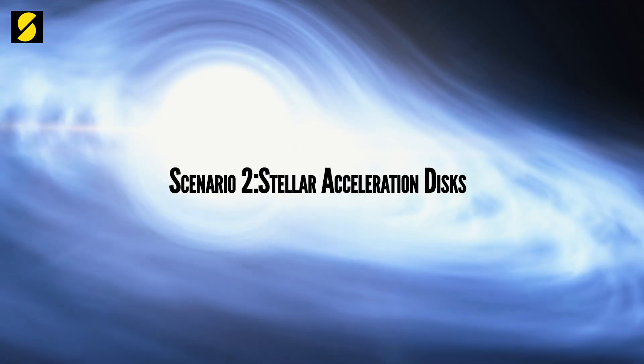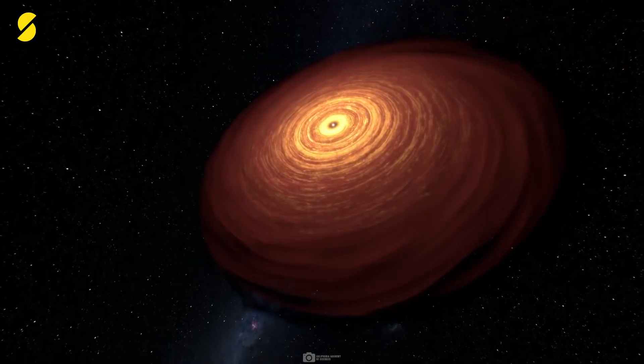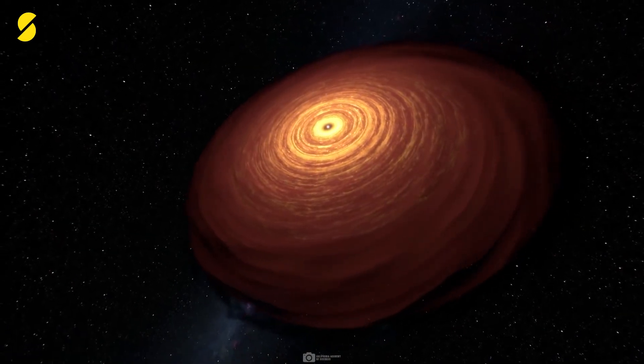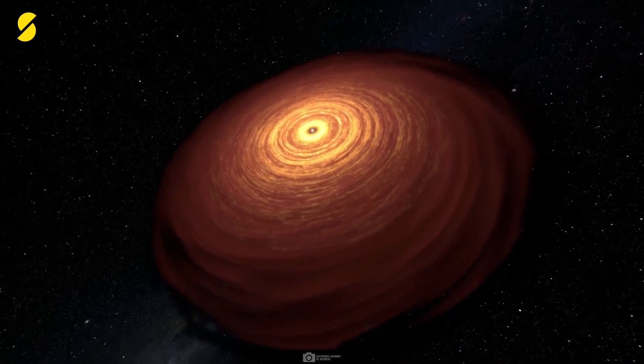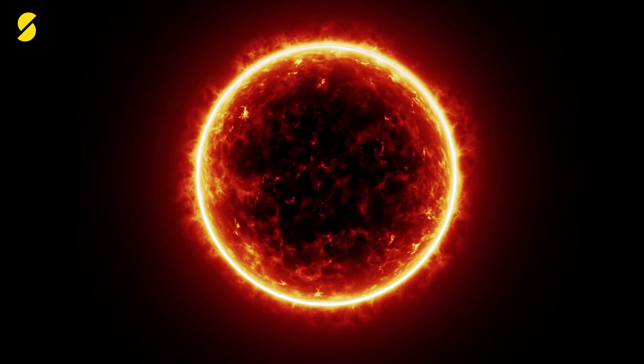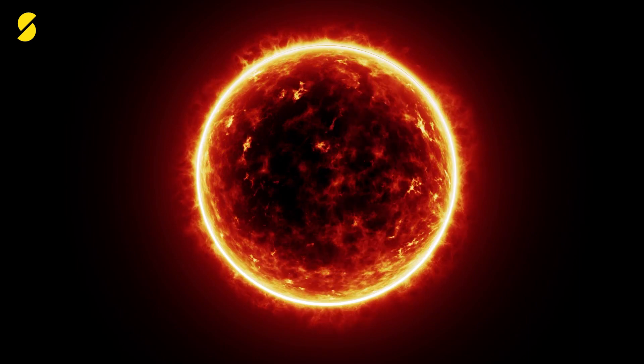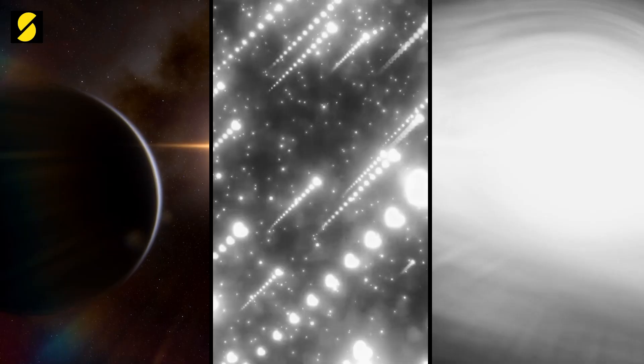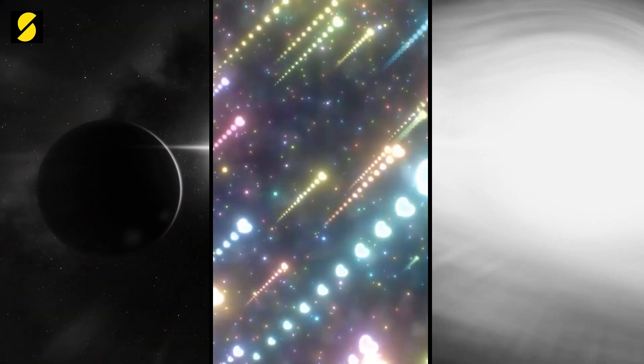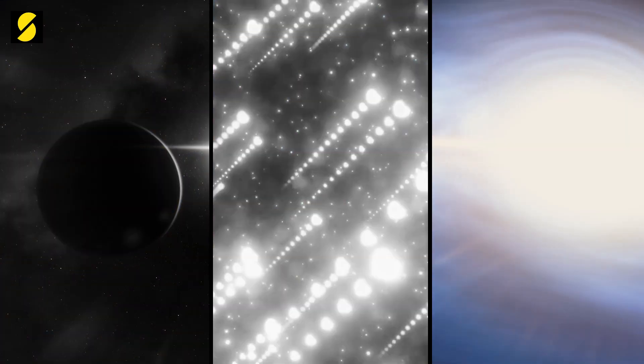Number two: Stellar accretion disks. Stellar accretion disks are found around newborn stars as planets start to form around them. This star, however, is thought to be too old for any remnants of a stellar accretion disk to still be orbiting. So, not a planet, not comets, and not an accretion disk.